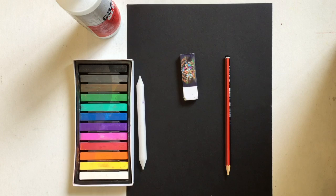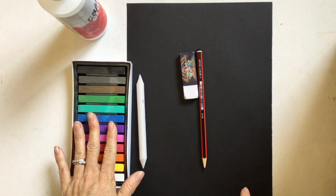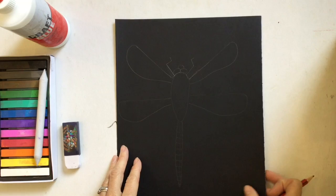What we're going to need are a black piece of paper, a pencil, an eraser, bottle of glue, chalk pastels, and a blending tool. That's what we're going to need, so let's get started.